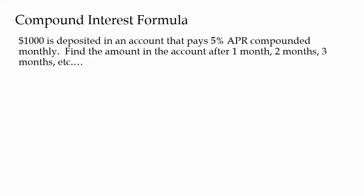We've got $1,000 we're going to deposit in an account that pays 5% APR, compounded monthly. Find the amount in the account after one month, two months, three months, etc. A couple things to really focus on here: this APR is the annual percentage rate. This 5% would be how much you would get in a year, but in this problem we're compounding monthly — we're going to give interest every month. You're not going to get 5% every month; if you're getting 5% a year you're only going to get 1/12 of that per month. So 5% divided by 12 would be your monthly percentage rate. If it was given quarterly, it'd be 5% divided by 4.